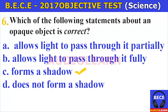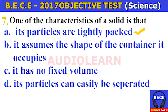Number six. Which of the following statements about an opaque object is correct? An opaque object A. allows light to pass through it partially, B. allows light to pass through it fully, C. forms a shadow, D. does not form a shadow. The answer is C. forms a shadow. An opaque object forms a shadow.